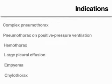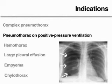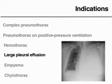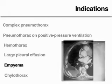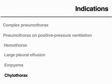The most common indications for chest tube drainage are pneumothorax that is recurrent, persistent, under tension or bilateral, any pneumothorax in a patient on positive pressure ventilation, hemothorax, recurrent or symptomatic large pleural effusion, empyema, and chylothorax.